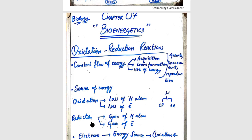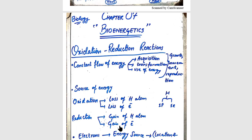We can also understand this through the hydrogen atom. A hydrogen atom has one proton and one electron. If a compound loses a hydrogen atom, it also loses an electron. When oxygen causes hydrogen to be lost from a compound, that is oxidation — the loss of an electron is oxidation. Conversely, if a compound gains a hydrogen atom and gains an electron, that is reduction.